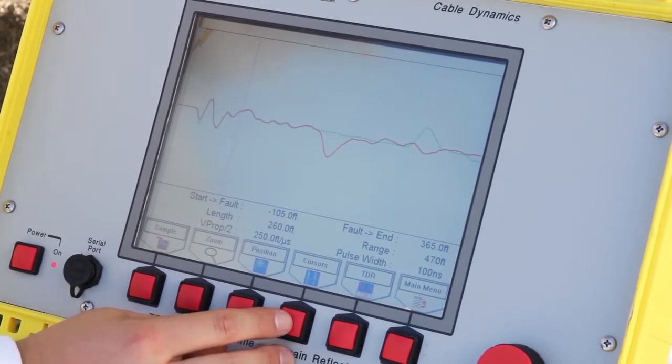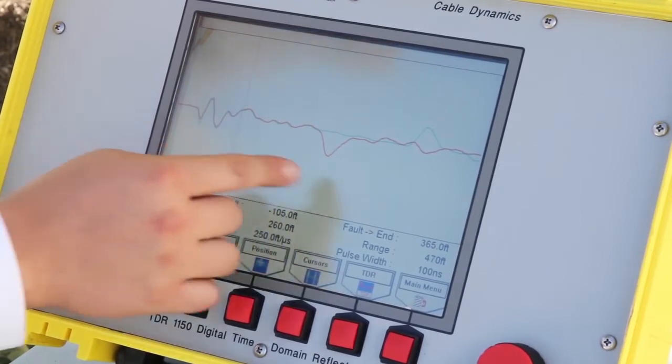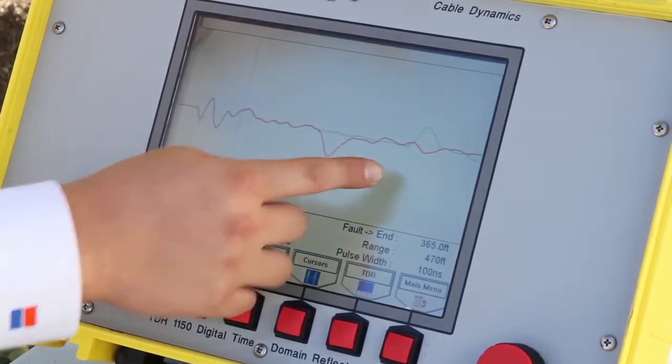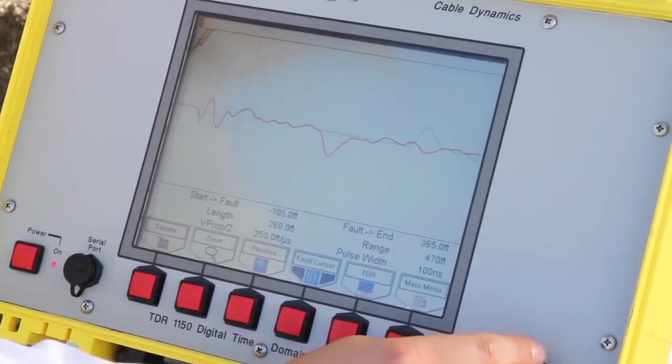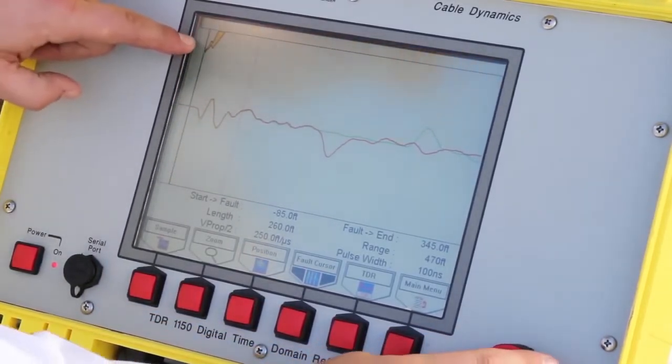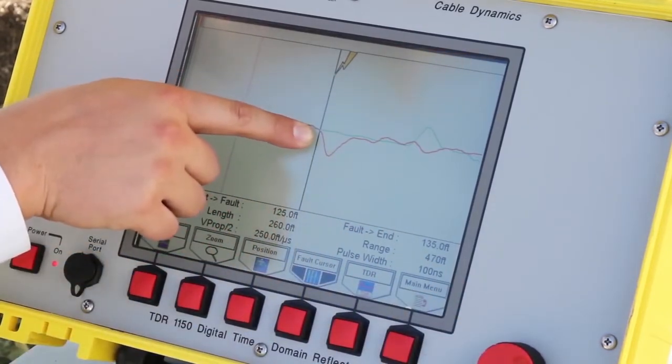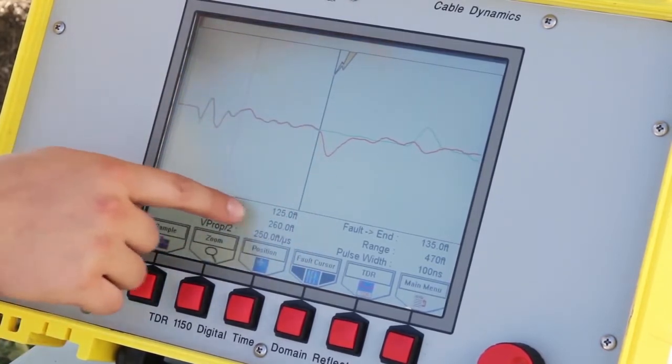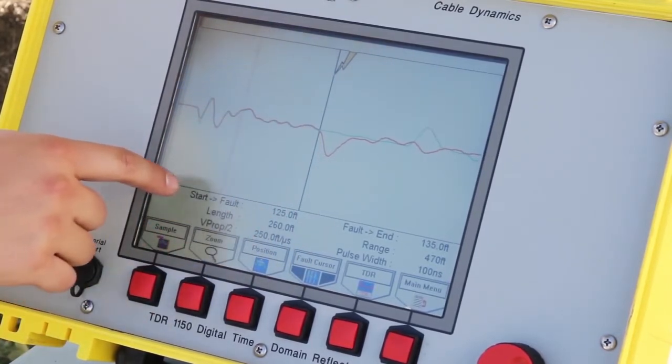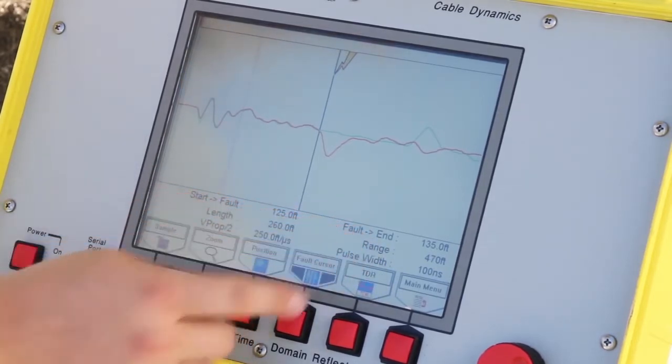We'll adjust our cursors. Again, we've already set the start cursor with the hookup point, and we've also set the end cursor when we did the low voltage TDR. So now we'll set the fault cursor, which is signified with a black line and a lightning bolt. So we'll scroll that out using the red rotary knob to the beginning of the negative inflection. That will be approximately where our cable fault is at 125 feet. The TDR will display the distance from the start of the cable and also from the end of that particular cable as well.